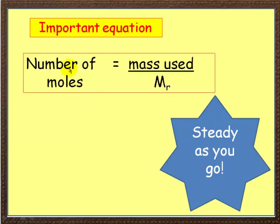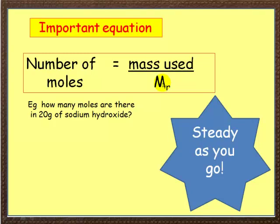Now the number of moles is given by the mass you've used divided by the relative formula mass. Okay, let's look at an example here. How many moles are there in 20 grams of sodium hydroxide?